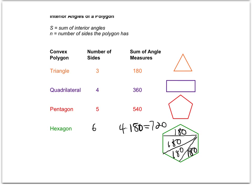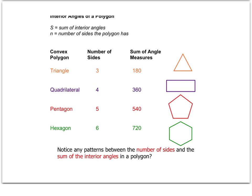We could keep on going, but hopefully we can notice a pattern here between the number of sides and the sum of the interior angles in the polygon.